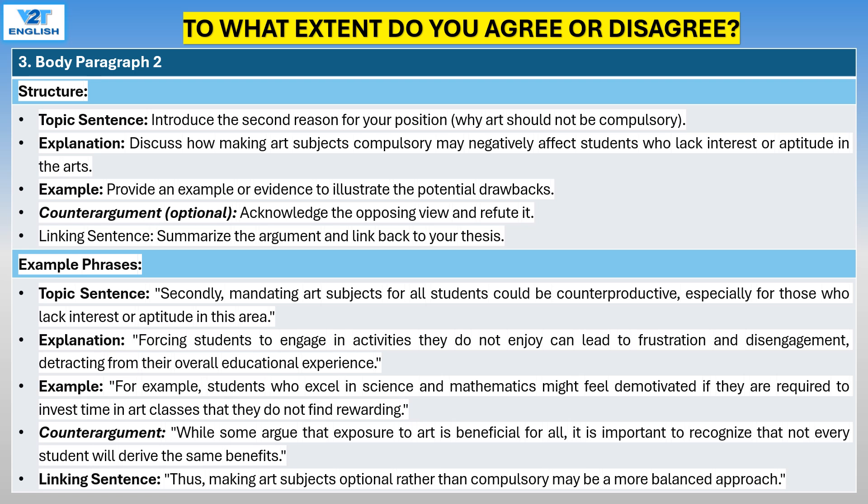Body paragraph 2 structure: Introduce the second reason for your position — why art should not be compulsory. Discuss how making art subjects compulsory may negatively affect students who lack interest or aptitude in the arts. Provide an example to illustrate the potential drawbacks. Optionally, acknowledge the opposing view and refute it. End with a linking sentence summarizing the argument and linking back to your thesis.